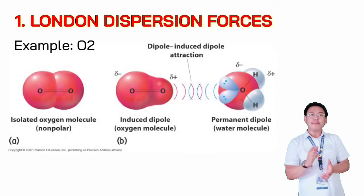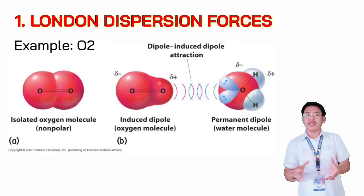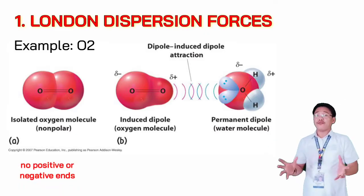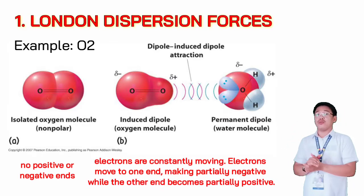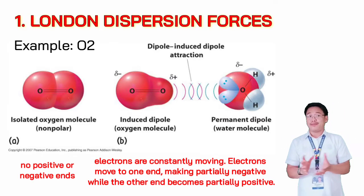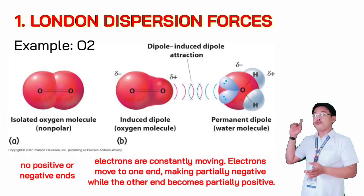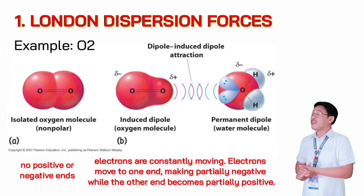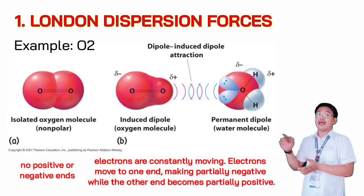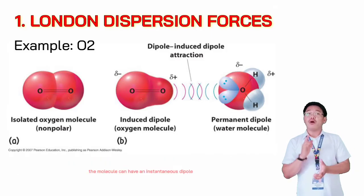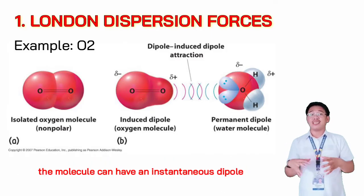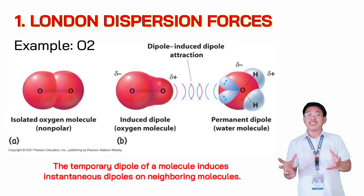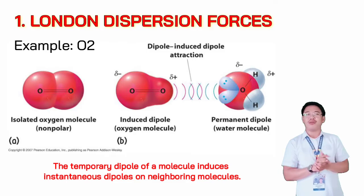For example, in a non-polar molecule such as oxygen gas, there are no positive or negative ends. However, the electrons of this molecule are constantly moving. There are times when electrons move to one end, making that end partially negative while the other end becomes partially positive. Hence, the molecule can have an instantaneous dipole. The temporary dipole of a molecule induces instantaneous dipoles on the neighboring molecules.